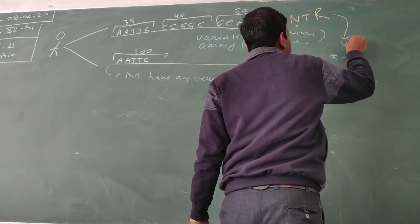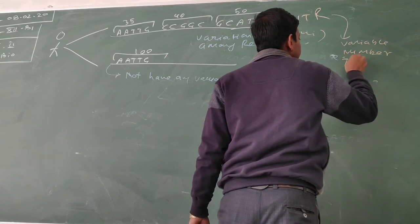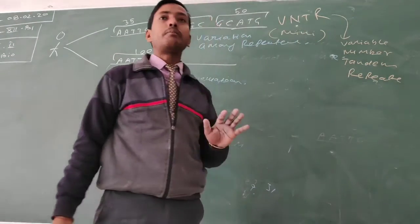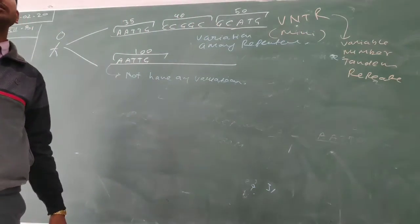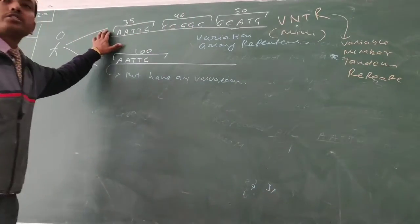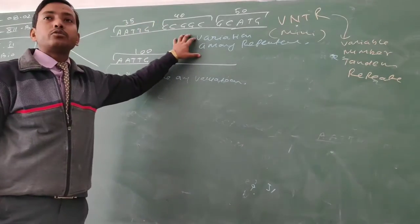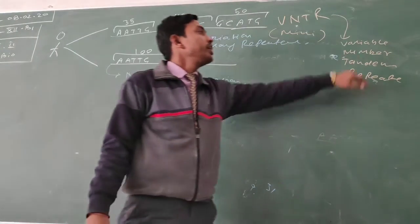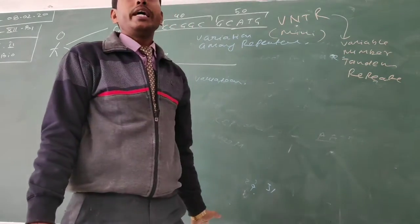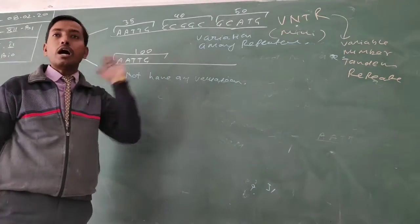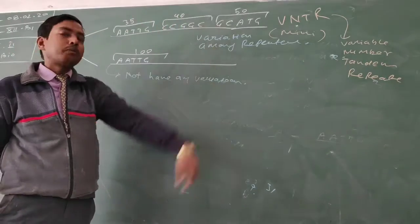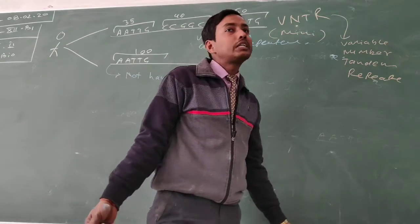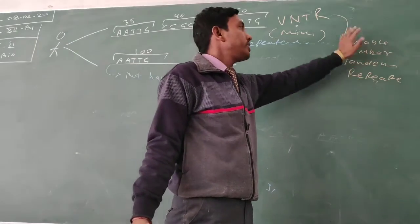VNTR stands for Variable Number of Tandem Repeats. Variable means there is variation among the nitrogenous base pair sequences. Number refers to the count of repetitions — for example, the first group repeats 30 times, the second group 20 times, and the third group 50 times, showing variation in the number of repeats. Tandem means one after another — after one group of repeated sequence, another group is also repeated, and a third group is also repeated, so many groups of nitrogenous base pairs are arranged in tandem.